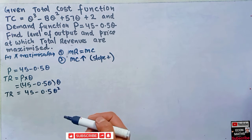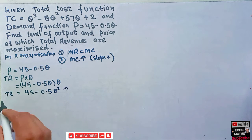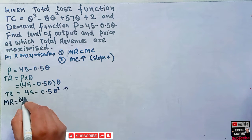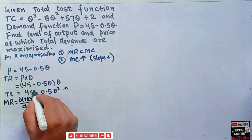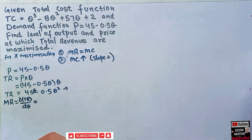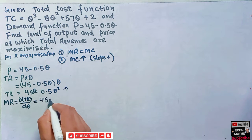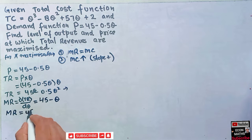From total revenue we can calculate marginal revenue. Marginal revenue is simply the first derivative of total revenue with respect to quantity: dTR/dQ. The derivative of 45Q is 45, and the derivative of 0.5Q² brings the exponent down as coefficient, giving 2 × 0.5 = 1, so MR = 45 - Q.